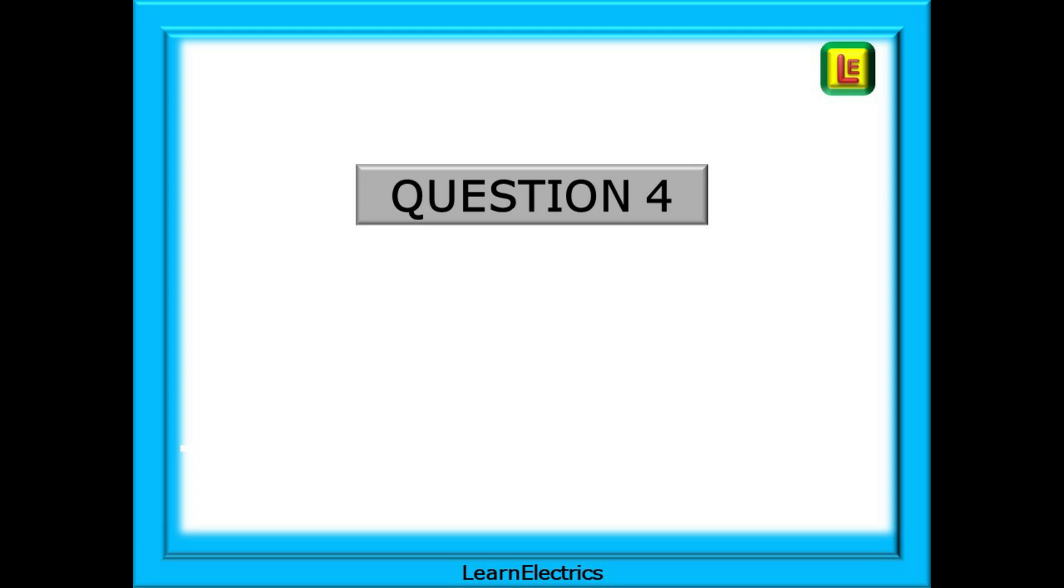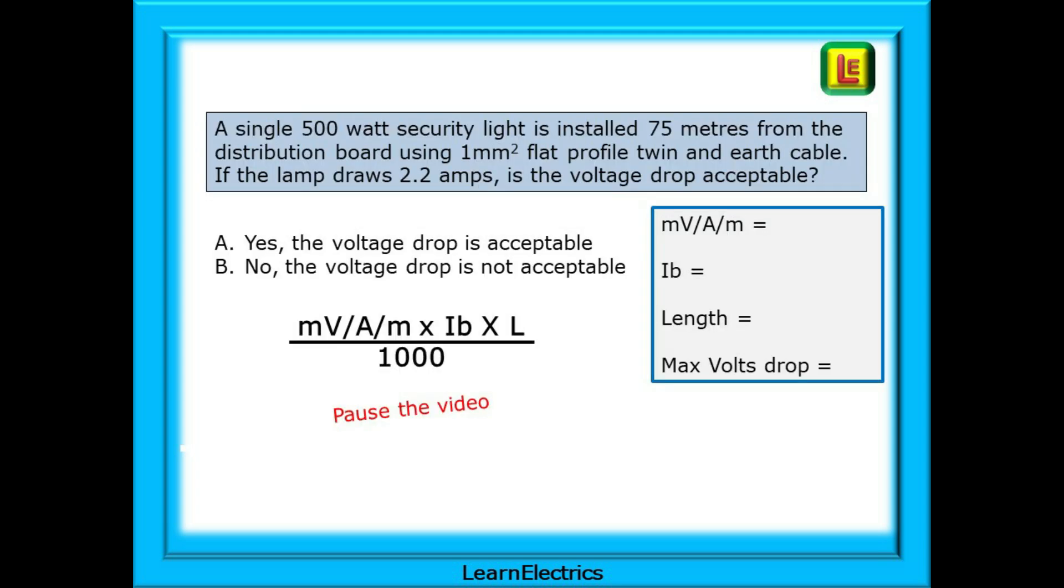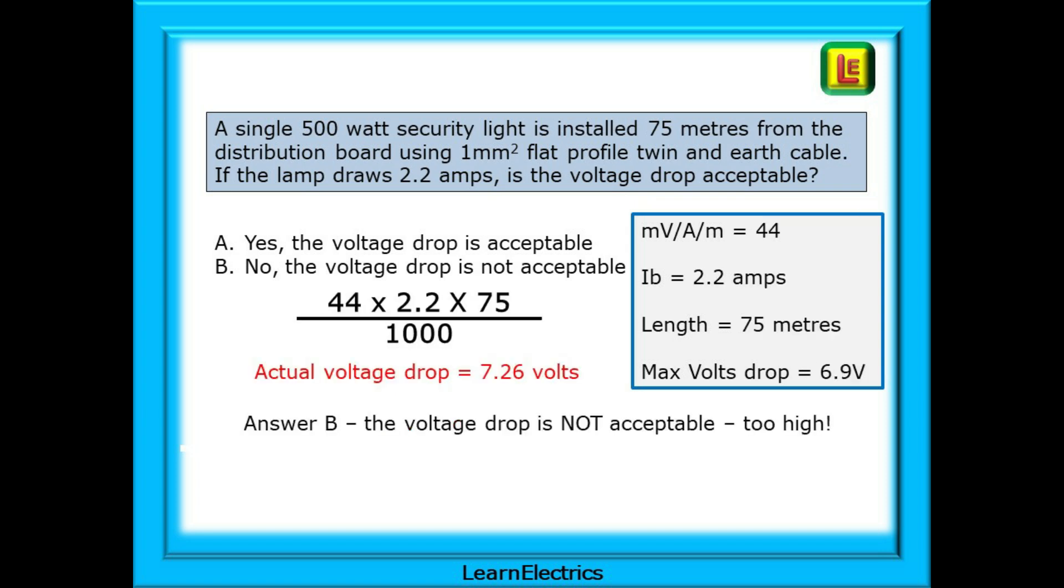Question 4 is about lighting circuits. A single 500 watt security light is installed 75 metres from the distribution board using 1 square millimetre flat profile twin and earth cable. If the lamp draws 2.2 amps is the voltage drop acceptable? And just two options to choose from. Pause the video and go through the answer process. The actual voltage drop is 7.26 volts and this is above the permitted maximum of 6.9 volts for lighting circuits. Therefore choose answer B. The voltage drop is not acceptable.